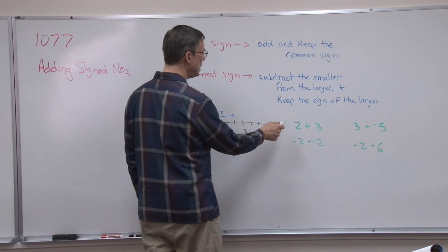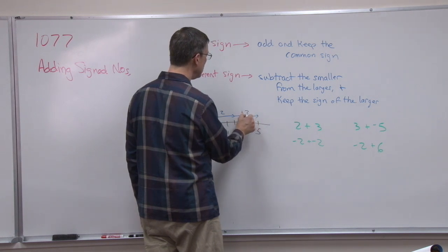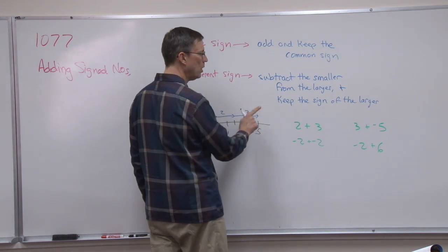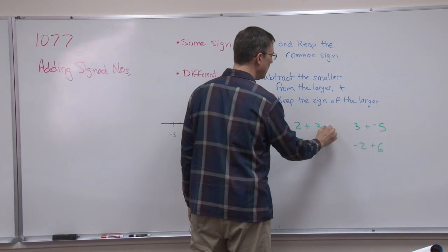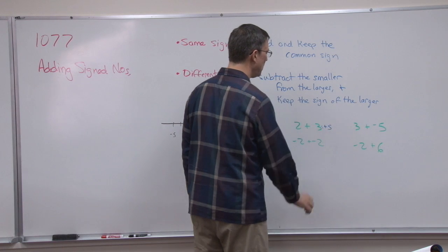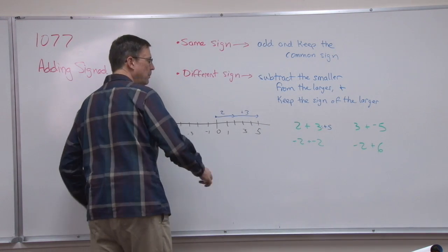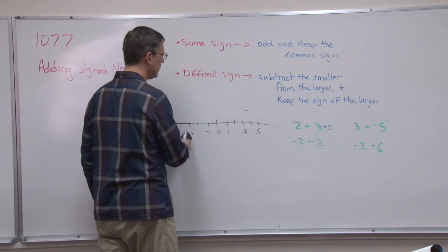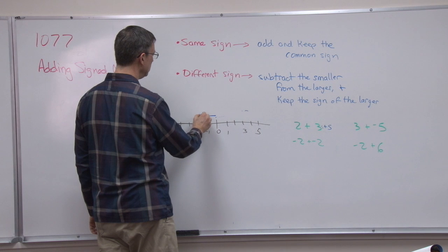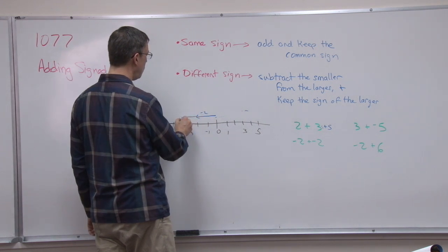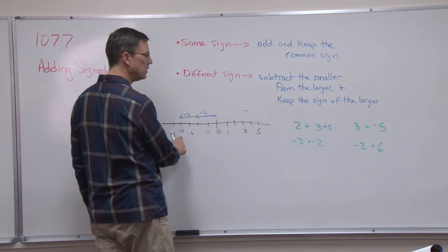Now I'm going to add the addend of three to that. Notice I'm going three more in the positive direction — notice where we land: positive five. For the next problem, negative two plus negative two, I would go two in the negative direction and then go two more in the negative direction, and look where I land: negative four.